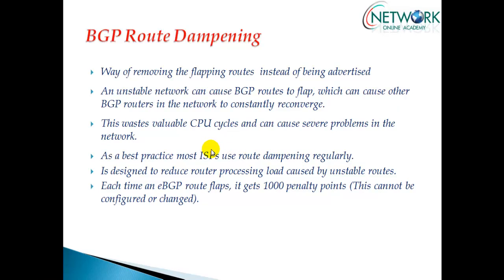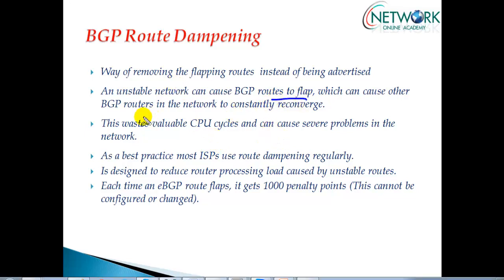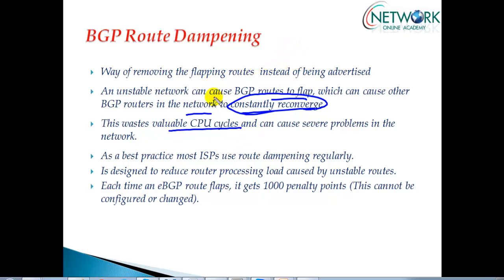BGP will recalculate the same process multiple times because routes are sometimes advertised and sometimes not. An unstable network can cause a BGP route to flap, which can cause BGP routes in the network to constantly reconverge. When reconvergence occurs it increases the processing utilization on the router, wasting valuable CPU cycles and causing severe problems in the network. BGP itself is a process-intensive protocol.